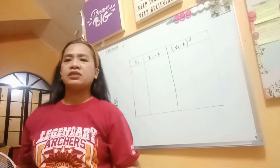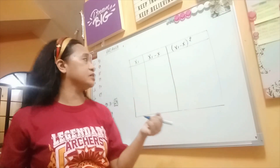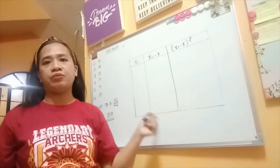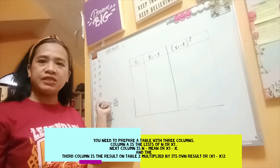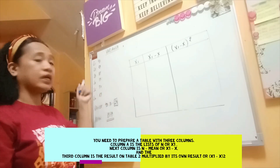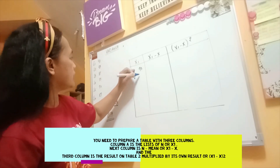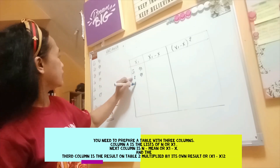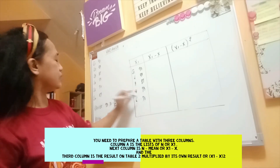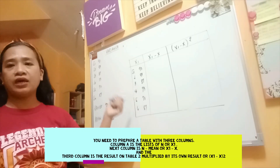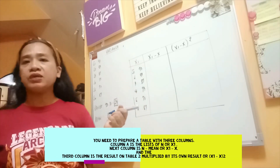Now, for the variance, we already have the mean of 83.33%. We can now start the computation. First, we make a table with three columns. The first column is N — that is the value of each sample. So we have: student 1 is 90, student 2 is 93, student 3 is 87, student 4 is 73, student 5 is 70, and student 6 is 87. We already have column N. Now we need to deduct each value from the mean of 83.33.